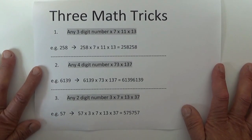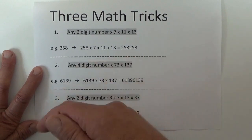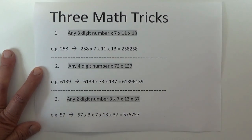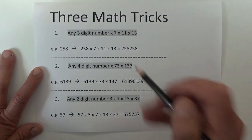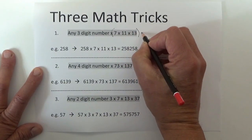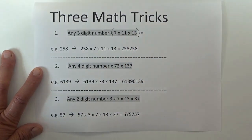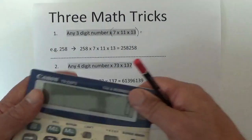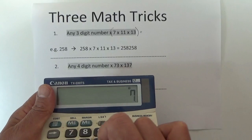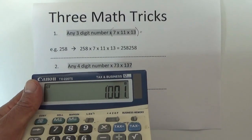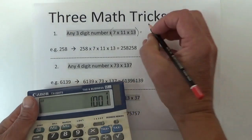Now if you want to think about how this trick works, click on the pause button — otherwise I'm going to go straight into the explanation. If you think about multiplying by 7, by 11, and by 13 — if you multiply 7 by 11 by 13, then that's the same as multiplying by 1001.